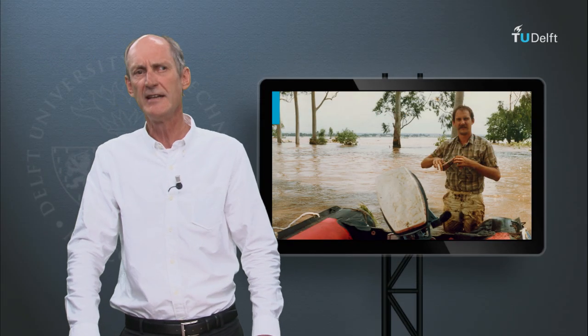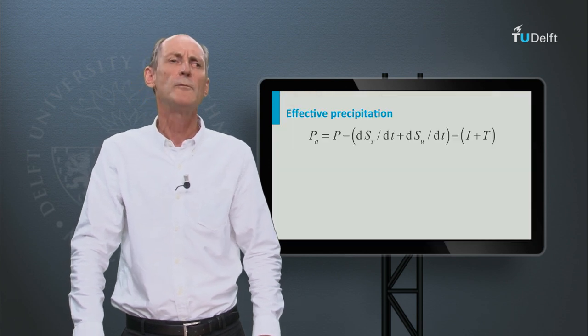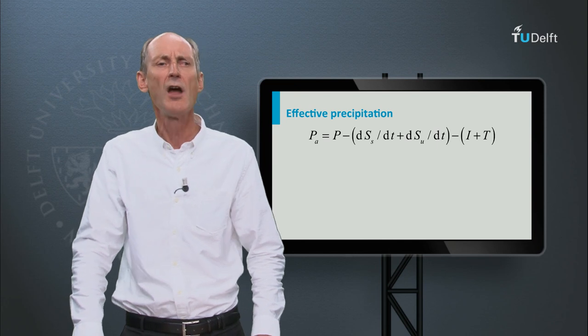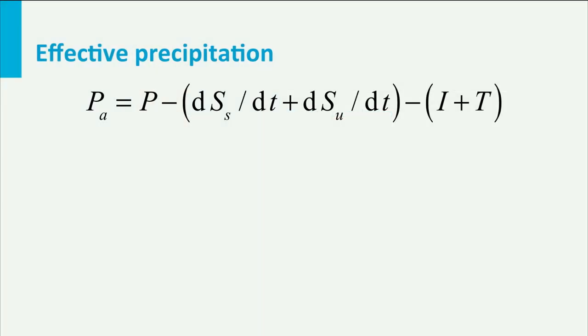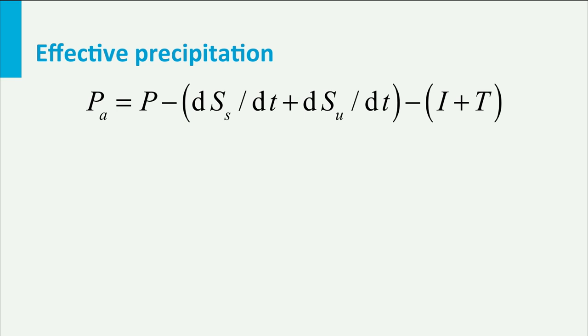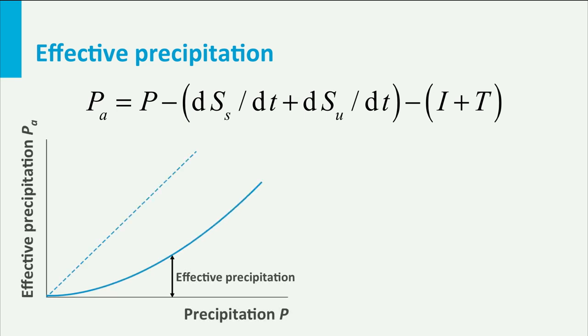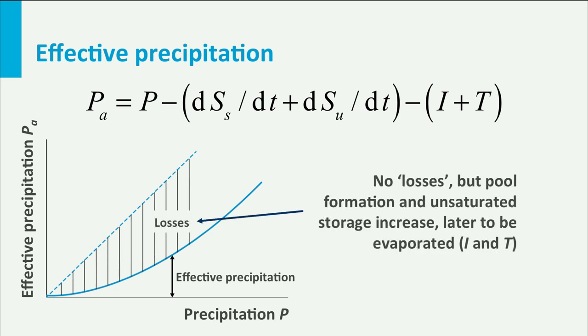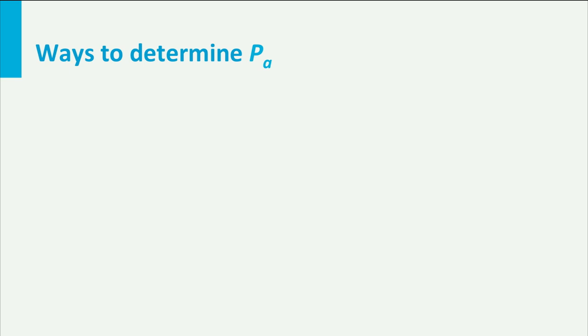Now let's discuss the flood generating mechanisms. When we want to determine the runoff as a result of a large precipitation event, we only should consider that part of the rain which contributed to the runoff, the so-called effective precipitation PA. We thus have to subtract that part of the precipitation that replenishes the soil moisture or that fills stagnant pools, later to be evaporated. The evaporation itself during a large precipitation event we may neglect.